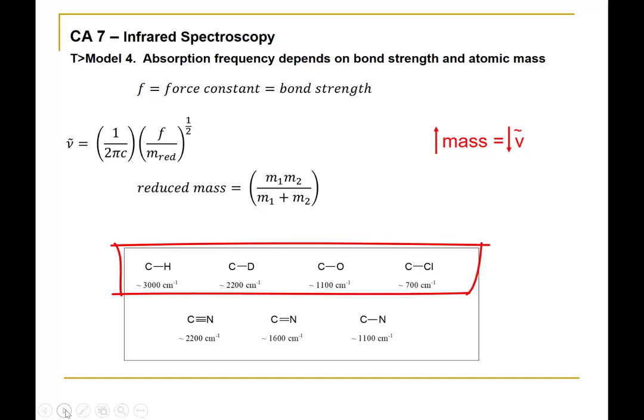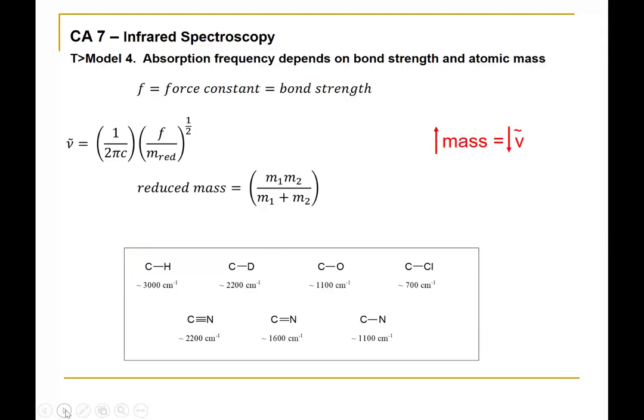Consider a series of bonds between carbon and other atoms — carbon-hydrogen, carbon-deuterium, all the way to carbon-chlorine. Keeping carbon constant, as the other atom's mass increases from hydrogen to chlorine, the wave number in centimeters to the minus one goes down. It's not necessary to memorize these numbers, but having these connections will be helpful when determining where you'd expect an absorbance corresponding to a particular kind of bond.